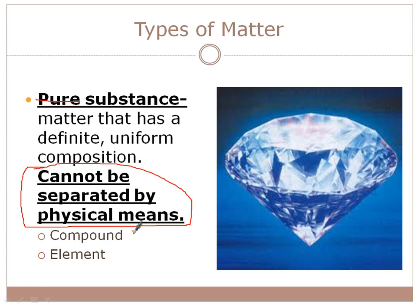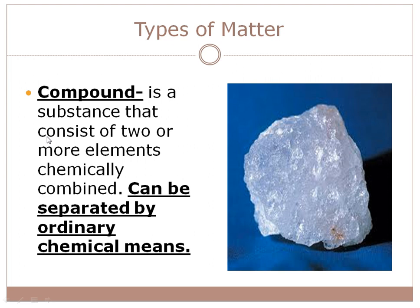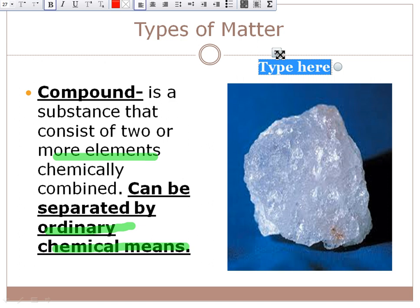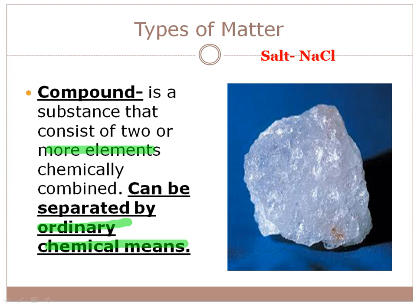The two types of substances are compounds and elements. A compound is a substance that consists of two or more elements chemically combined — that's the key. It cannot be separated by ordinary chemical means. For example, salt has two elements: Na is sodium and Cl is chlorine. Two different elements chemically combined — that is a compound, with the chemical formula NaCl.